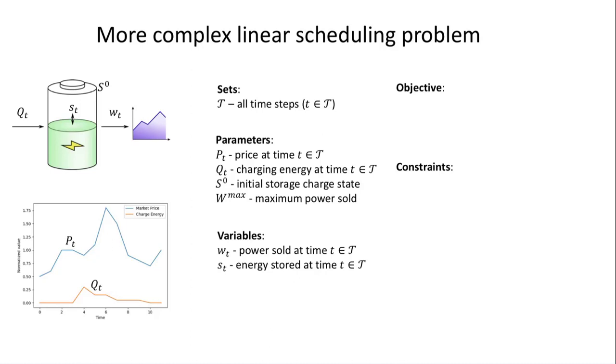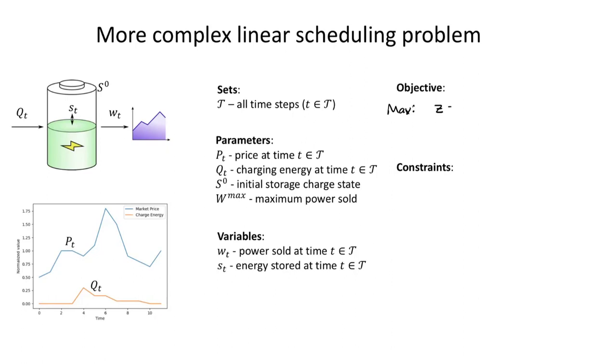So we can write that as follows. We're going to say, let's maximize. We're going to maximize our objective. And again, let's just call this Z so we can refer to it. So we're maximizing Z, and Z is going to be equal to the sum of, for all time in our time set,